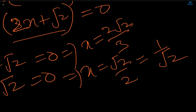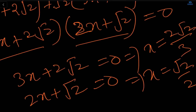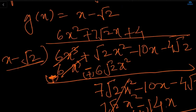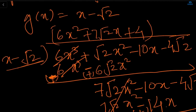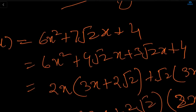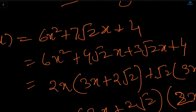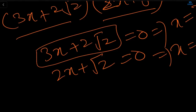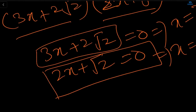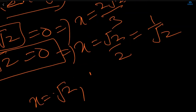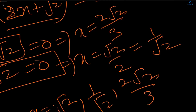So to summarize: we knew one zero of the polynomial, so we found one factor. Dividing px by that factor gave another quadratic factor. That quadratic is also a factor of the polynomial. By splitting its middle term, we found the other two zeros. The three zeros of this cubic polynomial are root 2, -2√2/3, and -1/√2.